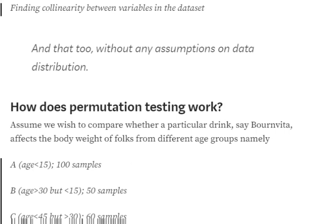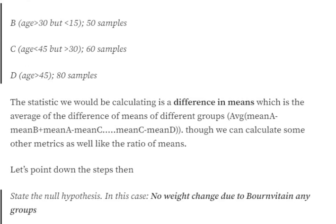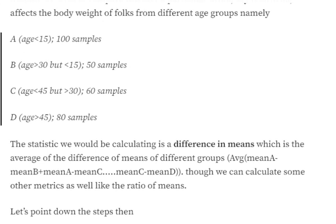We'll go with a basic example: assume we wish to compare whether a particular drink — say Bon Vita — affects the body weight of people from different age groups. We have four groups: age less than 15, 15 to 30, 30 to 45, and more than 45. Group A has 100 samples, B has 50, C has 60, and D has 80. The statistic we'll calculate is the difference in means — that is, the average of the differences between group means, such as mean A minus mean B, plus mean A minus mean C, and so on.